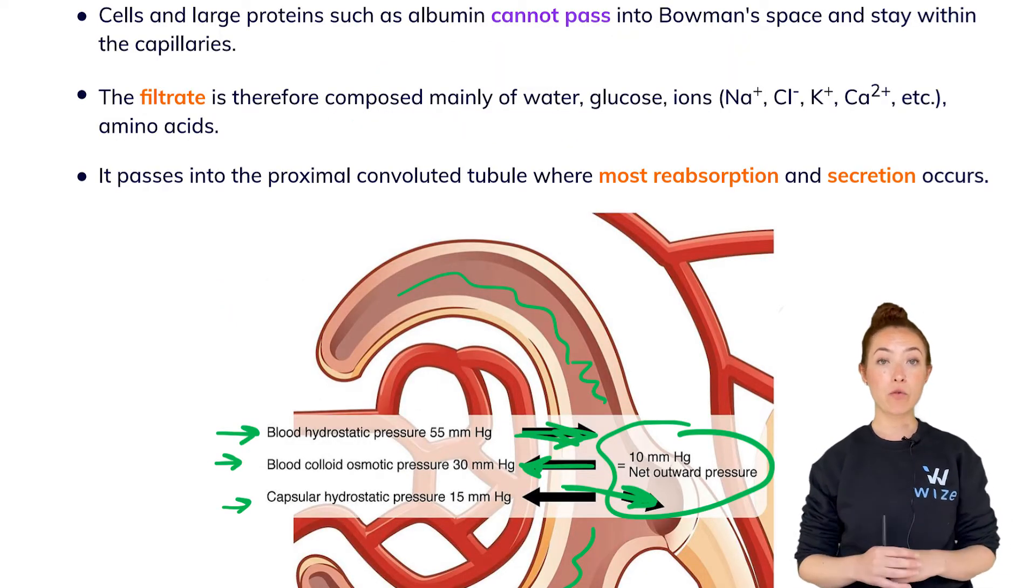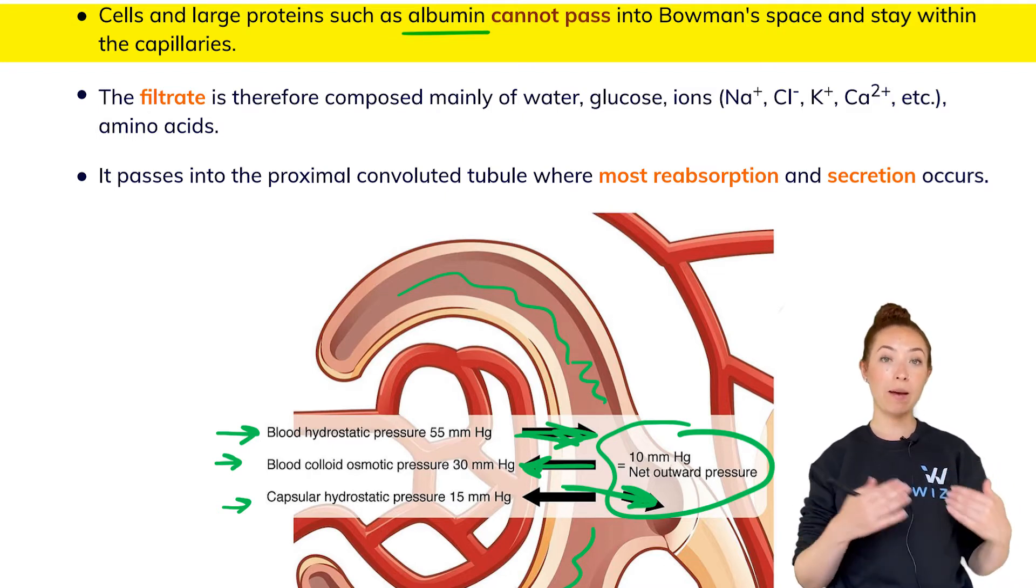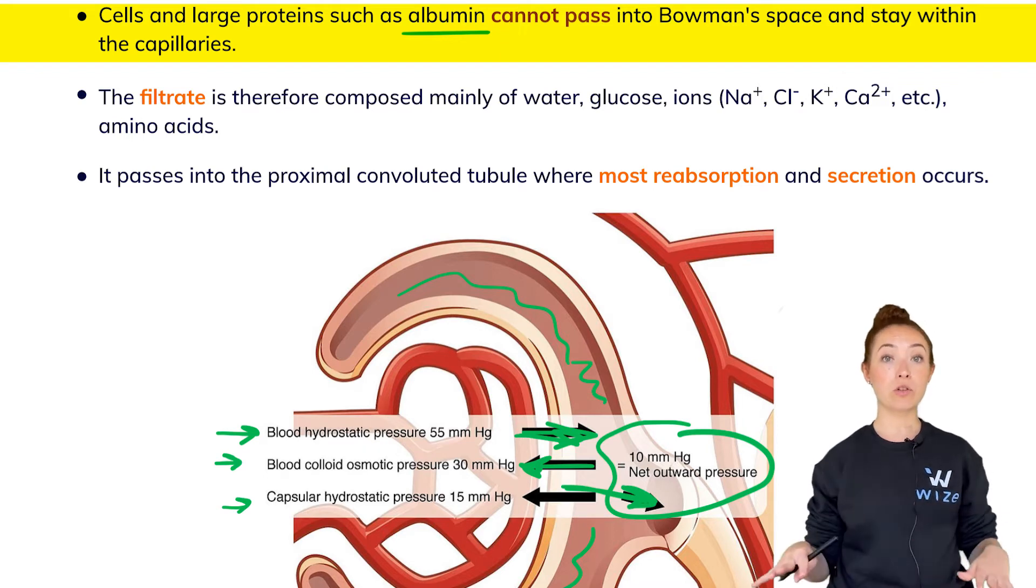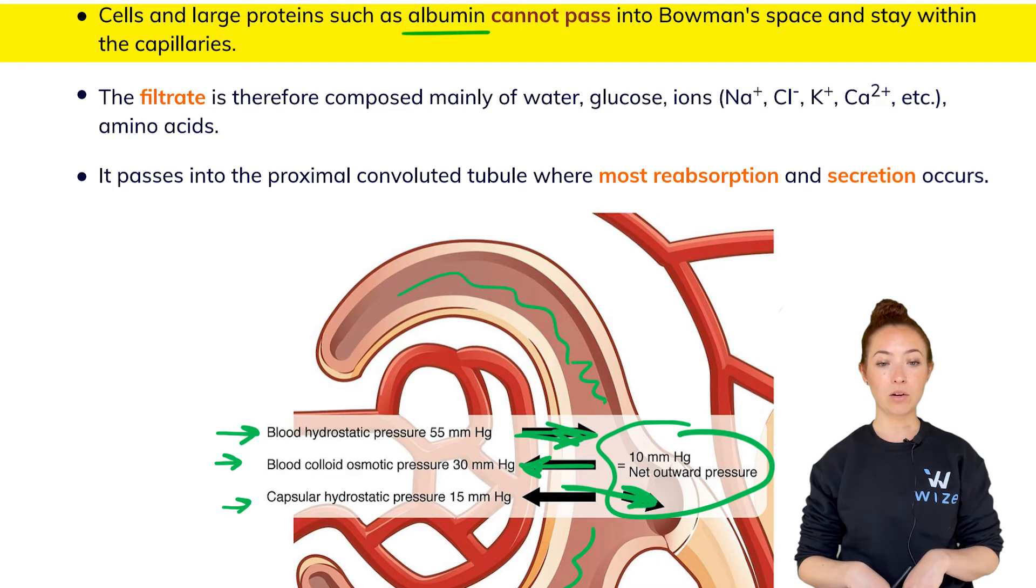One thing that you should definitely know for the purposes of the MCAT is that cells and large proteins, large proteins here when I talk about that mainly albumin, are not able to pass from the capillaries into Bowman's space and so they stay within the capillaries. So you should not ever see any cells in urine. You should not see a lot of protein in urine. That's usually an indication that there's something wrong with the kidneys. Usually those are way too big to pass through Bowman's capsule and so they will stay in the capillaries.